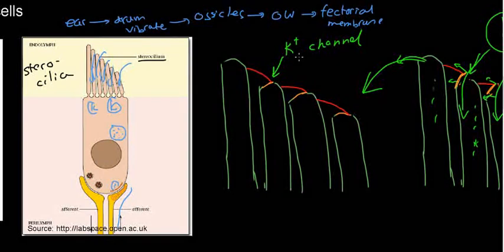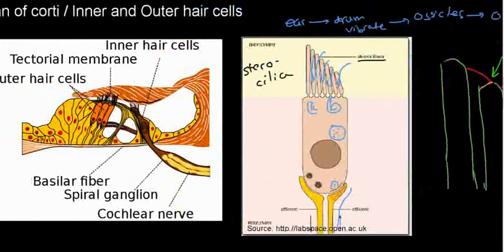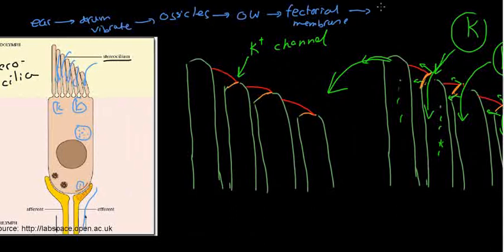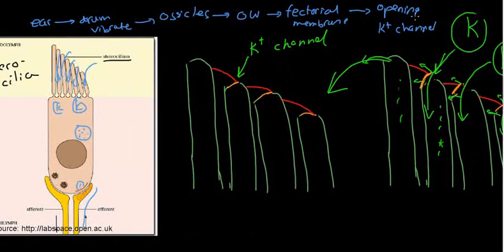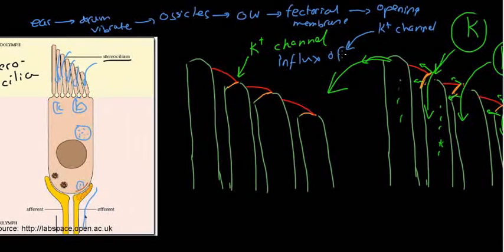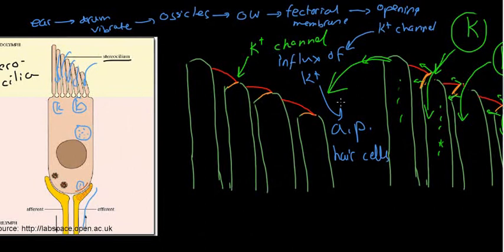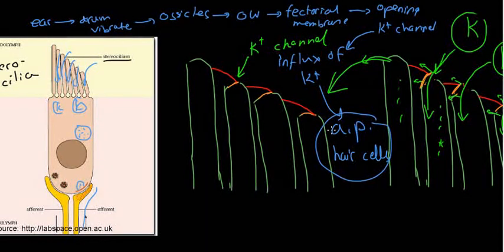The organ of Corti is really inside the cochlea — it's not a separate structure; it's just housed inside the cochlea. Once the tectorial membrane vibrates, potassium channels open and we get an influx of potassium. Even though we learned that potassium is in greater concentration inside typical cells, that's not the case here. This influx of potassium is essentially the action potential of the hair cells — the stronger the vibration, the more intense the action potential in terms of its frequency.